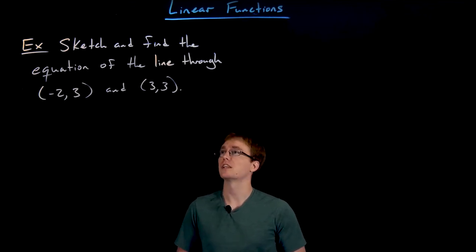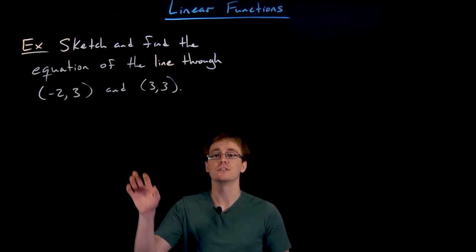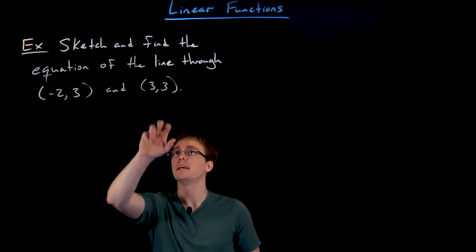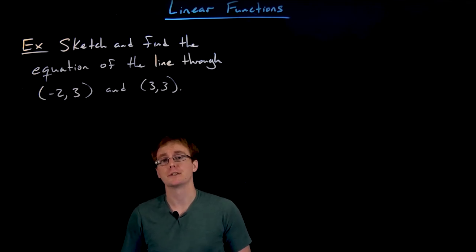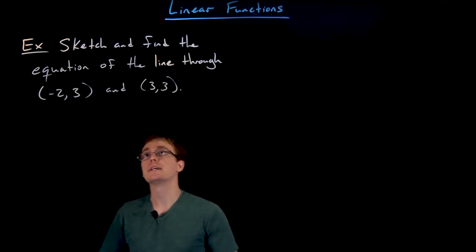Welcome back everyone. In this example we are asked to sketch and find the equation of the line that goes through these two given points. The first point is (-2, 3) and the second point is (3, 3). So let's jump right into this example and start trying to solve it purely algebraically.